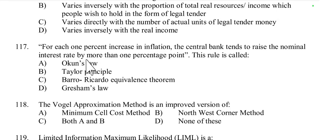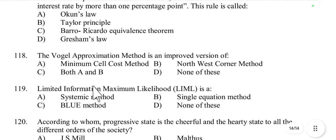Question number 117: For each one percent increase in inflation, the central bank tends to raise the nominal interest rate by more than one percent point. This rule is called Taylor's principle. The Taylor principle is part of the Taylor rule formulated by economist John B. Taylor, suggesting that for each one percent increase in inflation, the central bank should raise the nominal interest rate by more than one percent point to stabilize the economy and control inflation. Option B is correct.